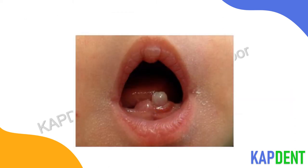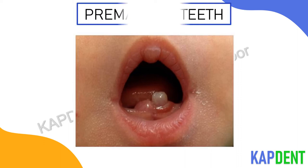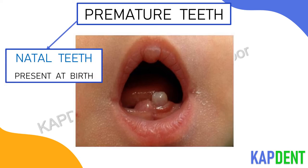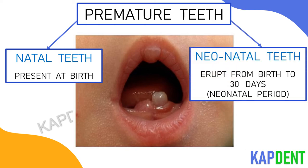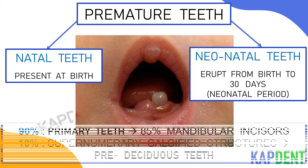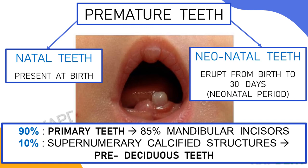Sometimes an infant may be born with teeth which are precociously erupted. If the teeth emerge before the first three months of life they are called premature teeth. Those present at birth are called natal teeth, while those erupting from birth to 30 days — that is, in the neonatal period — are designated as neonatal teeth. Almost 90% of these are from the primary dentition, with 85% being the deciduous mandibular central incisors, while 10% are supernumerary calcified structures called pre-deciduous teeth. The incidence of natal teeth is more frequent than neonatal teeth.